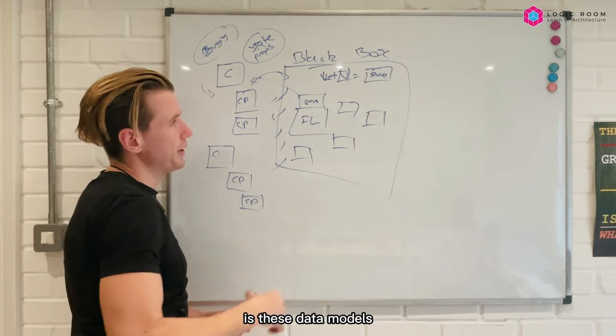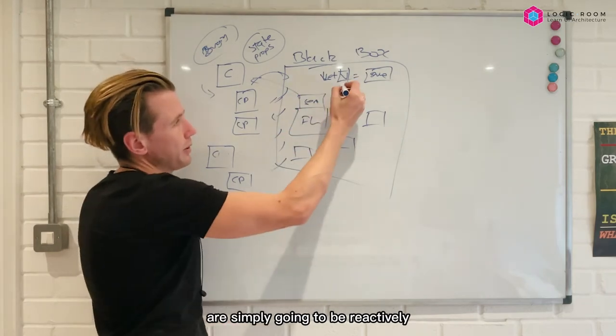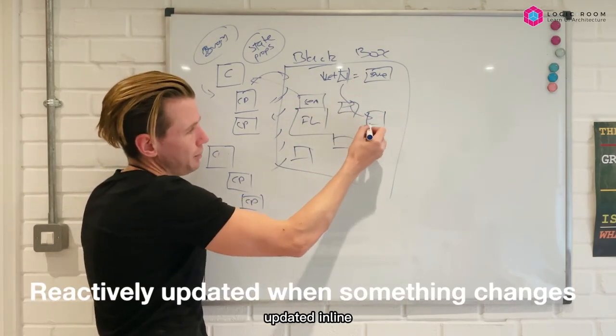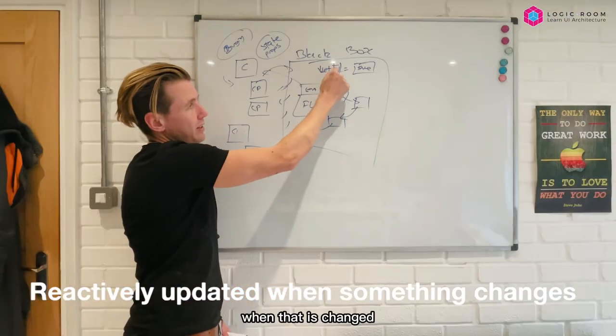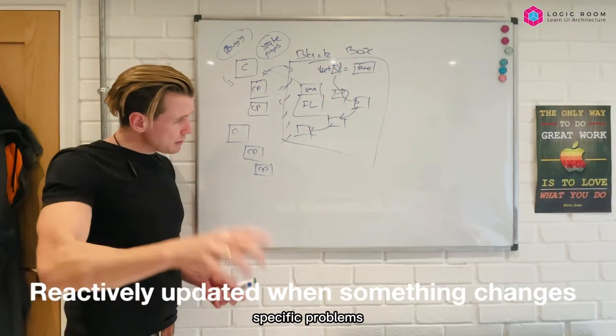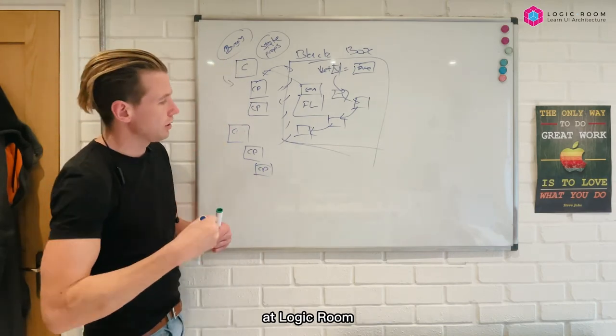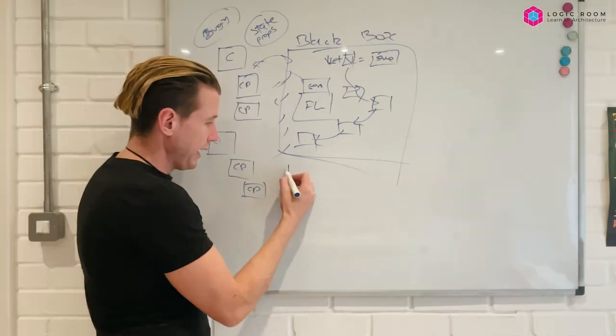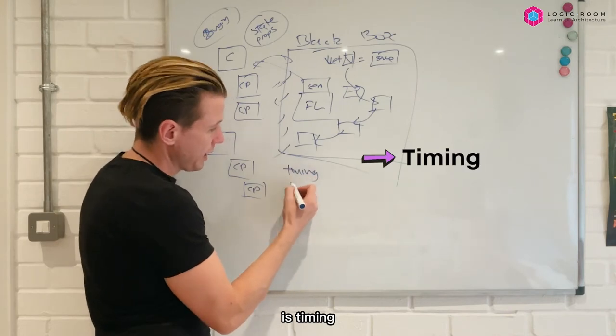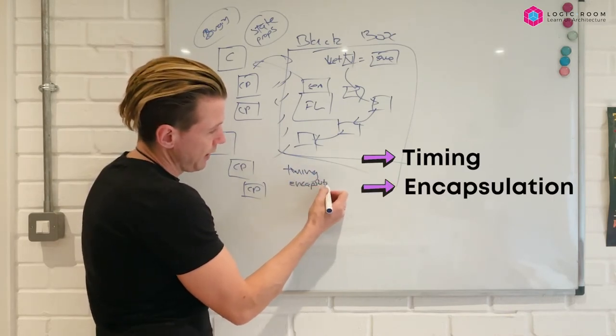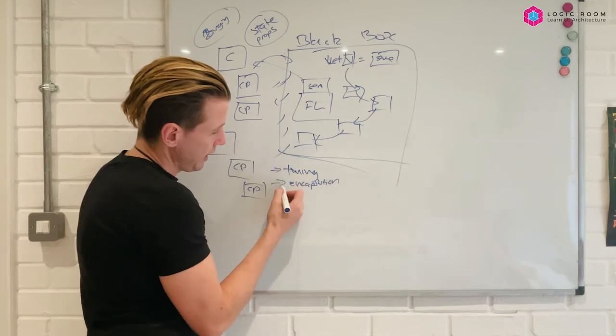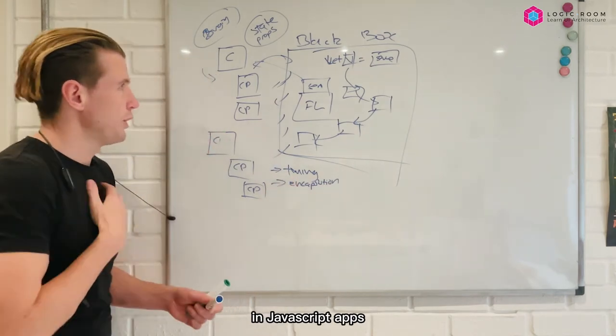And what's going to happen is these data models are simply going to be reactively updated inline when that is changed. And there's two specific problems the reactive architecture solves, and this is what we teach at Logic Room. The first one is timing and encapsulation.